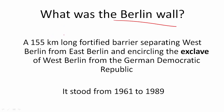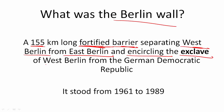Is it just a wall made up of brick and cement? No, it was a 155 kilometer long fortified barrier. It had soldiers guarding it, wire fences, and electricity mechanisms to prevent people from touching or crossing it. It separated West Berlin from East Berlin, and it also encircled the entire exclave of West Berlin from the German Democratic Republic. It stood from 1961 to 1989, almost 30 years.